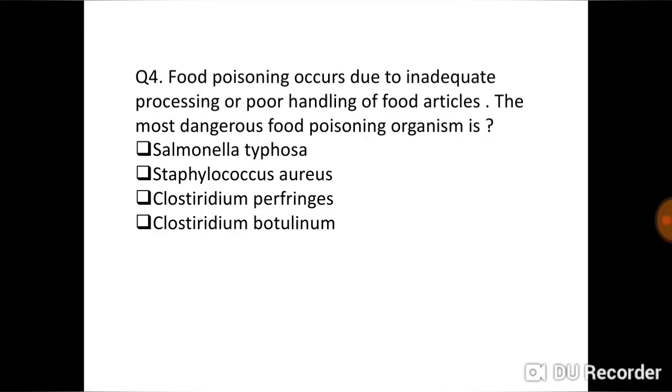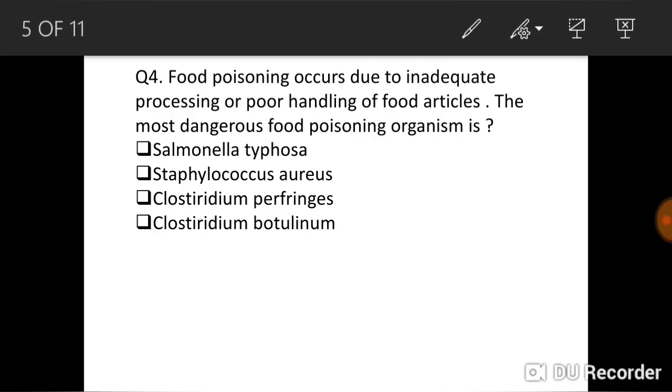Food poisoning occurs due to inadequate processing or poor handling of food articles. The most dangerous food poisoning organism is: So the most dangerous food poisoning organism is Clostridium botulinum. This is the most dangerous food poisoning organism which occurs in food.